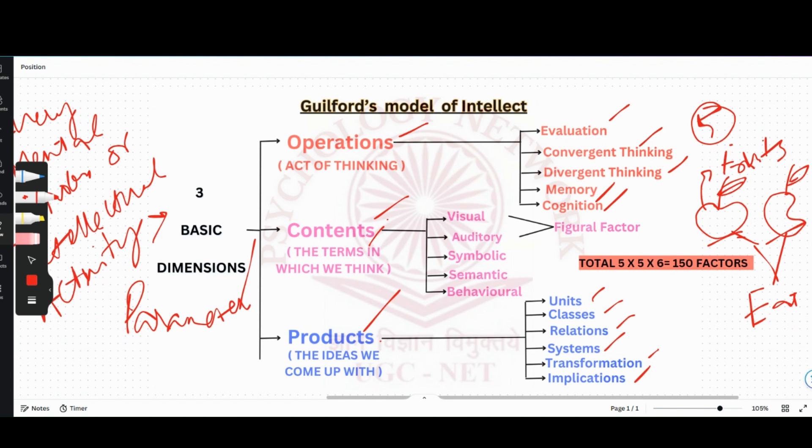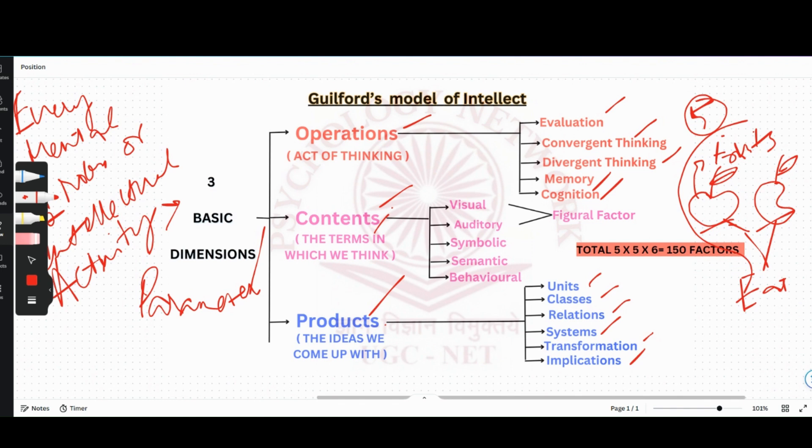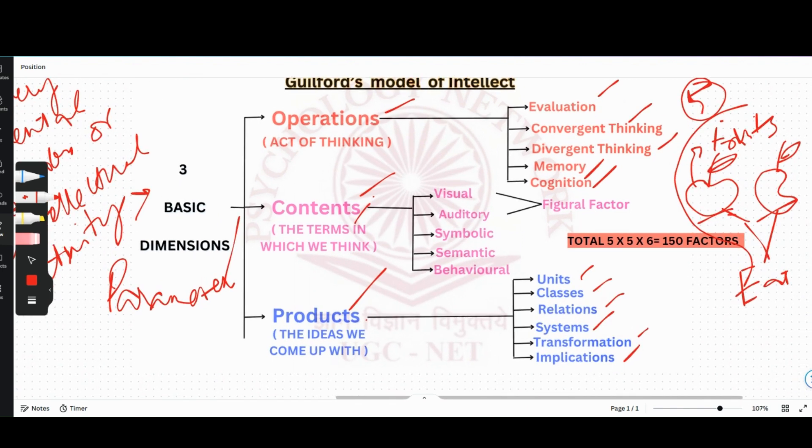So when we are thinking so much—that apple and mango, we eat them, they're fruits, they grow on trees—that is the act of thinking. We are taking stuff from our memory that we have learned. That is operations. Contents: how are we thinking? Maybe we are drawing it and thinking about it. That would be visually. The terms in which we are thinking is visual in this problem. Now what are the products which we come up with? We came up with classes—that it's a fruit. Fruit is a class.